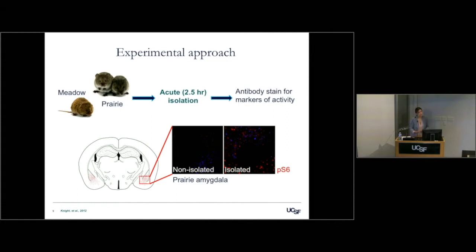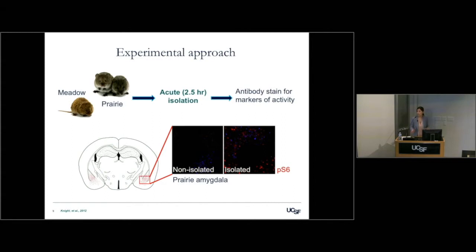We use an antibody to a specific marker for neuronal activity, so everywhere in the brain we see the stain it's marking an active neuron. We want to look in an unbiased way across the brain. Previously, many studies have looked at specific regions of interest, but we want to take an unbiased view of which regions are active throughout the whole brain.